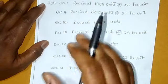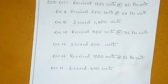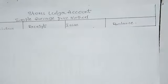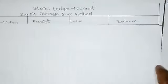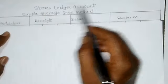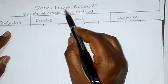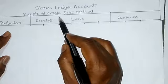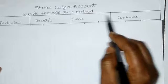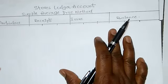Let us start with the proforma. The proforma has the following columns: Date, Particulars, Receipt, Issued, and Balance. We will enter data in each column accordingly.